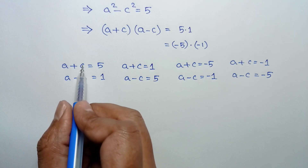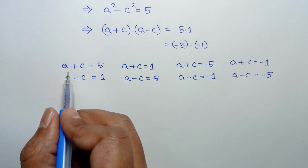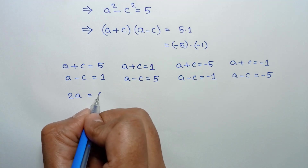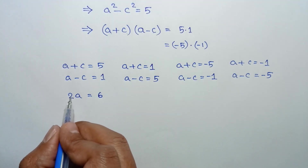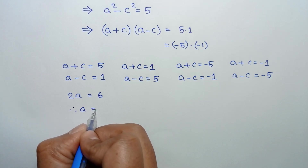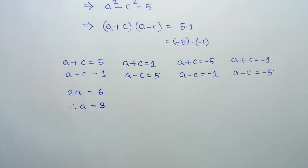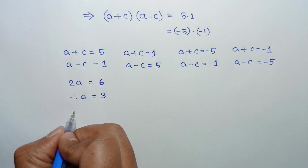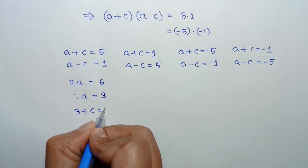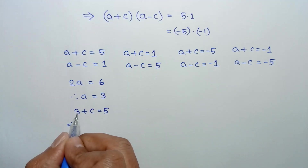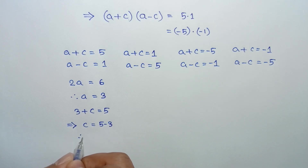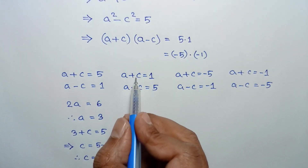Adding the first pair of equations, c cancels out. We get 2a equals 5 plus 1, which is 6. Dividing both sides by 2 gives a equals 3. Substituting a equals 3 into the equation 3 plus c equals 5, taking 3 to the right side gives c equals 5 minus 3, so c equals 2.